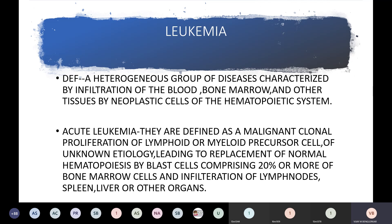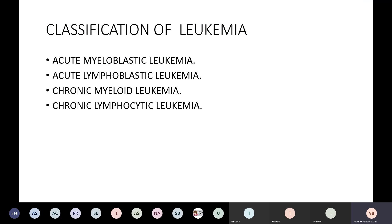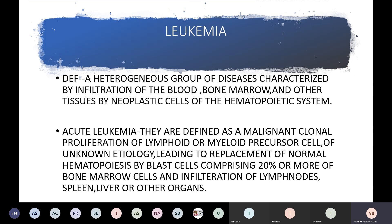They are defined as malignant clonal proliferation of lymphoid series derived from either B-lymphocyte or T-lymphocyte, or myeloid precursor cells derived from either RBCs, granulocytes, or platelets. This leads to replacement of normal hematopoiesis by blast cells — immature cells that make up 20% or more of the marrow cell population.